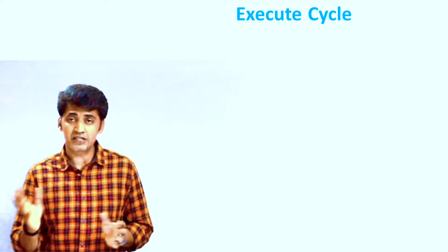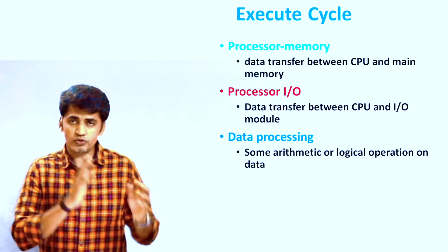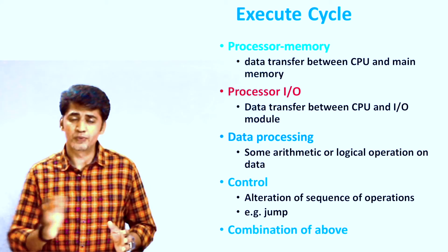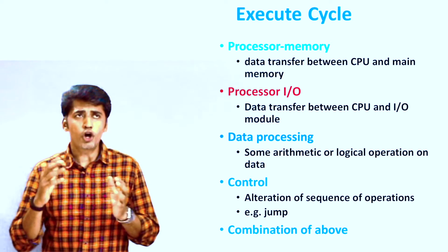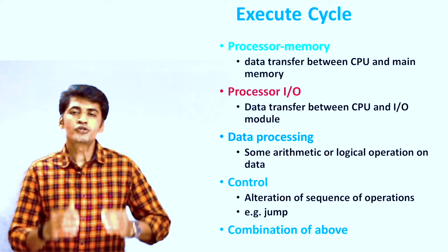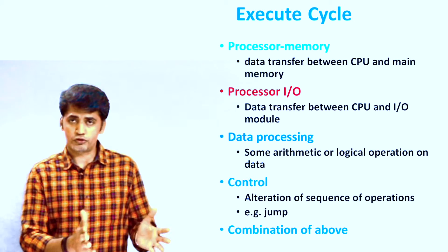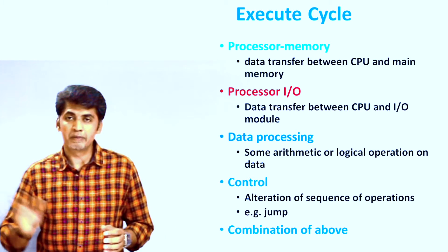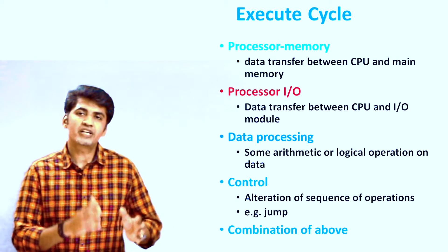The second step is the execute cycle. In the execute cycle, data transfers take place — from main memory to CPU, and from the IO module to the processor. After data fetch, data processing is performed by the processor. After processing, the resultant data is stored back in the memory location. These are the two different steps available in the basic instruction cycle.